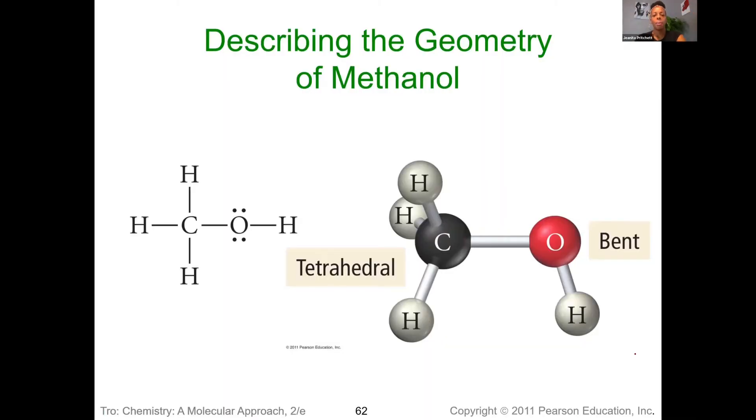Again, another example here shown for you, this methanol. Again, this carbon has zero lone pairs and four bonding regions. So the geometry would be tetrahedral, and that would be electron and molecular, because there are no lone pairs.